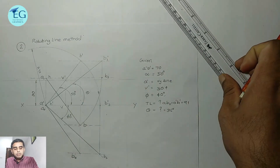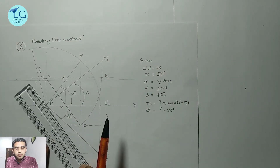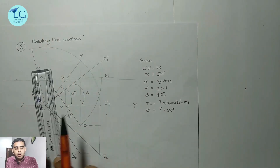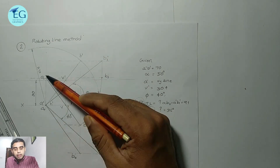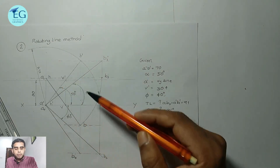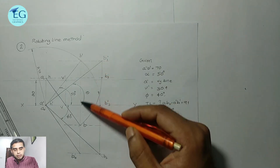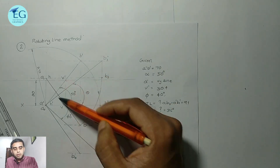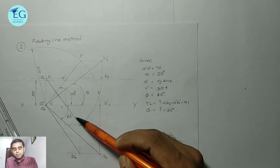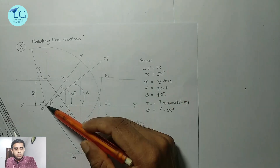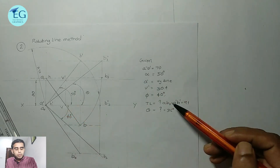Add A0-B0 parallel to V in the top view. Add the A-A projector to the original line. This gives the B-B projector. This is the final top view A-B. Now find the true length and true inclination with HP. A0-B2 is already equal to 91 mm.